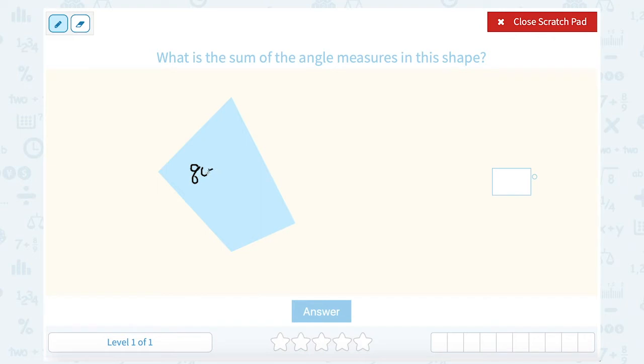I'm going to abbreviate that as quad. Now we do have a formula that we can use to help us figure out the sum of the angle measures for any shape based on the number of sides. And our formula is n minus 2 times 180, where n represents the number of sides. In this case, it's a quadrilateral, which means there's four sides. So we would say n is equal to 4.